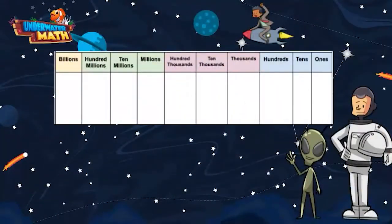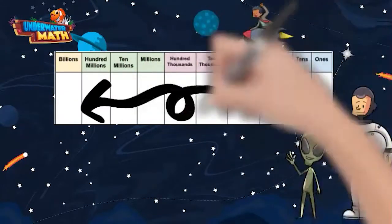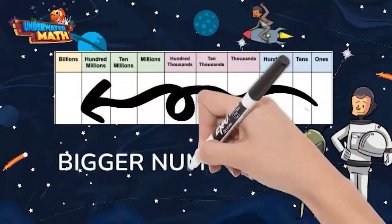First, let's look at a place value chart. As you move from right to left on the chart, or from ones to billions, the numbers get bigger. If you move the other direction, numbers get smaller.